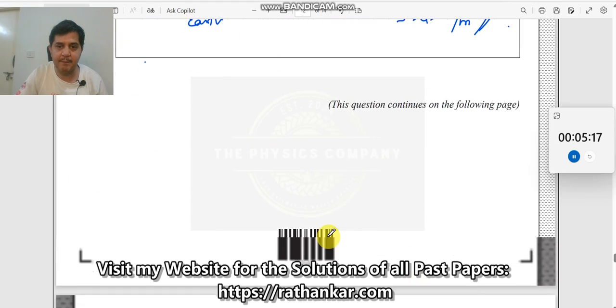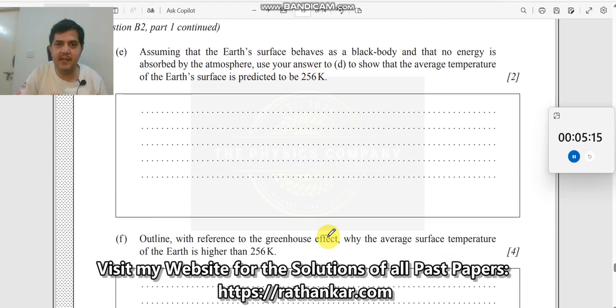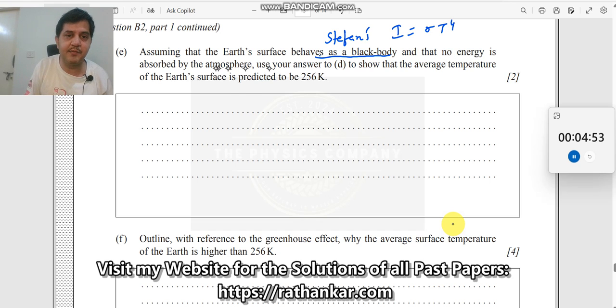Now, let's move on to the next one. Assuming that the earth's surface behaves as a black body, the moment there is a black body radiation, what should you have in mind? There is Stefan's law coming here. What is Stefan's law? The intensity is equal to sigma T power 4. There is no E here because it says black body and for black body E equals 1 emissivity. That no energy is absorbed by the atmosphere, use your answer D to show that the average temperature of the surface is predicted to be 256 Kelvin.